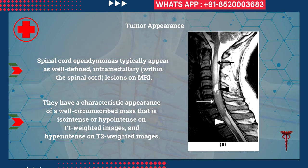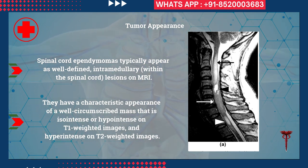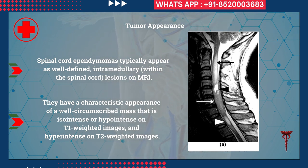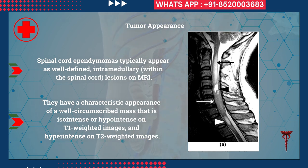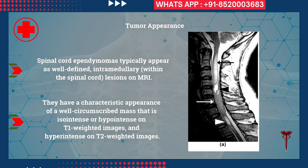Spinal cord ependymomas typically appear as well-defined masses - you can clearly appreciate the margins of the tumor in the sagittal, axial, and coronal cuts. They have a characteristic appearance of a well-circumscribed mass that is isointense to hypointense on T1-weighted images and hyperintense on T2-weighted images.